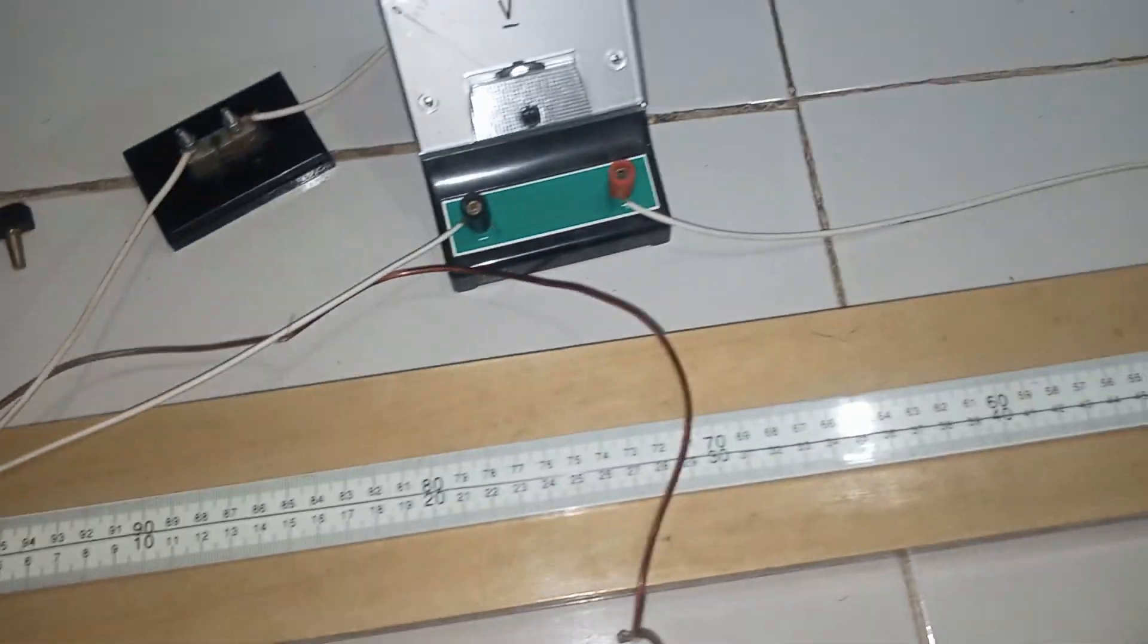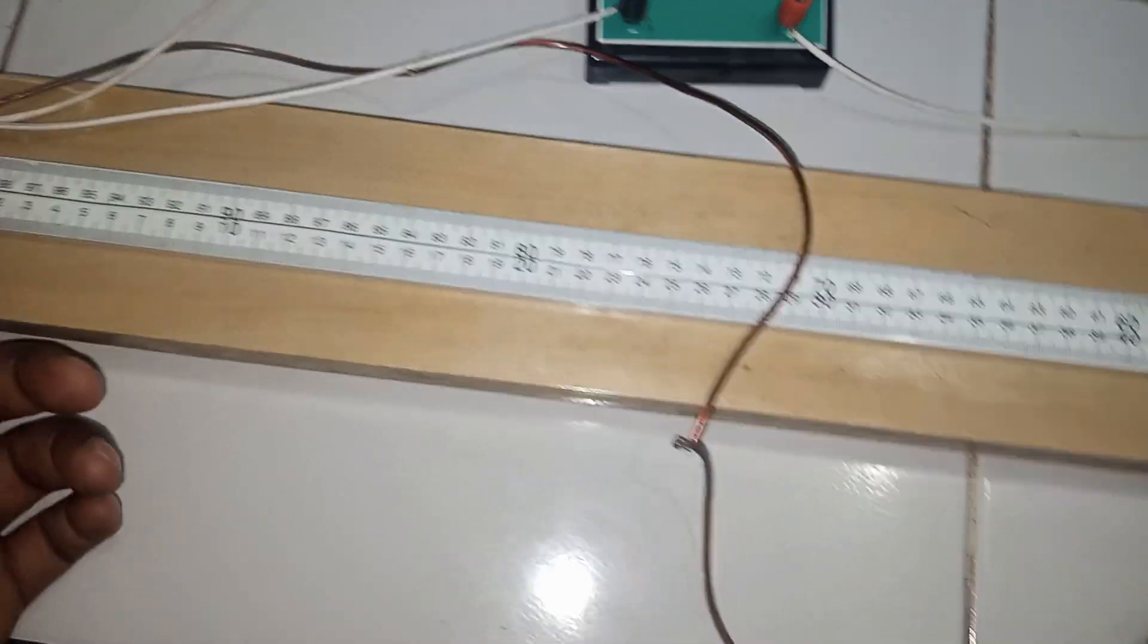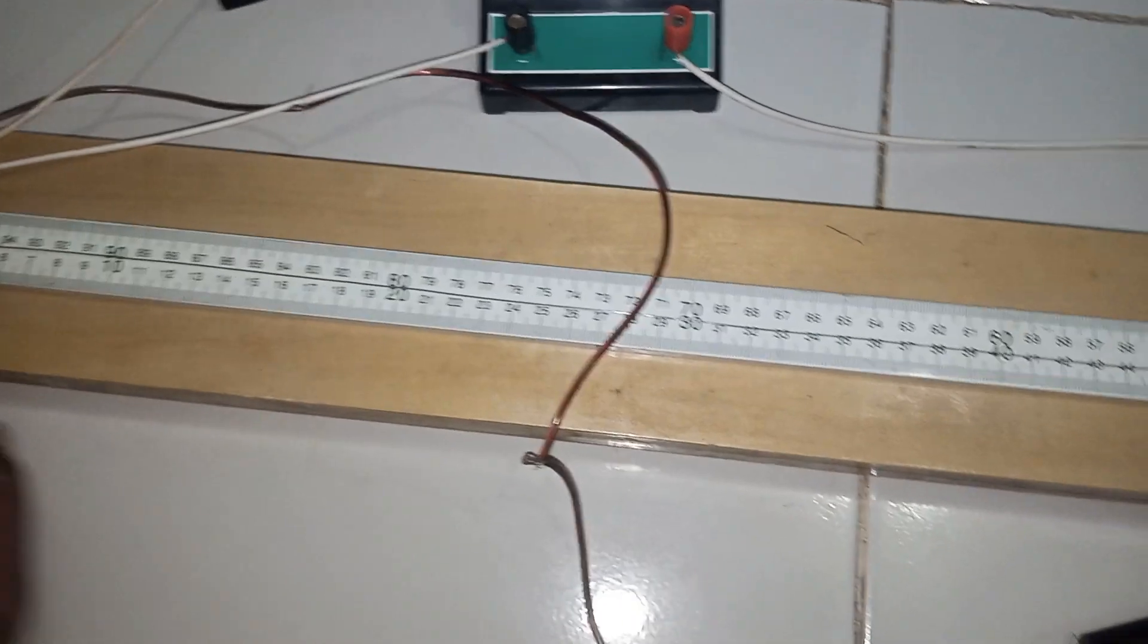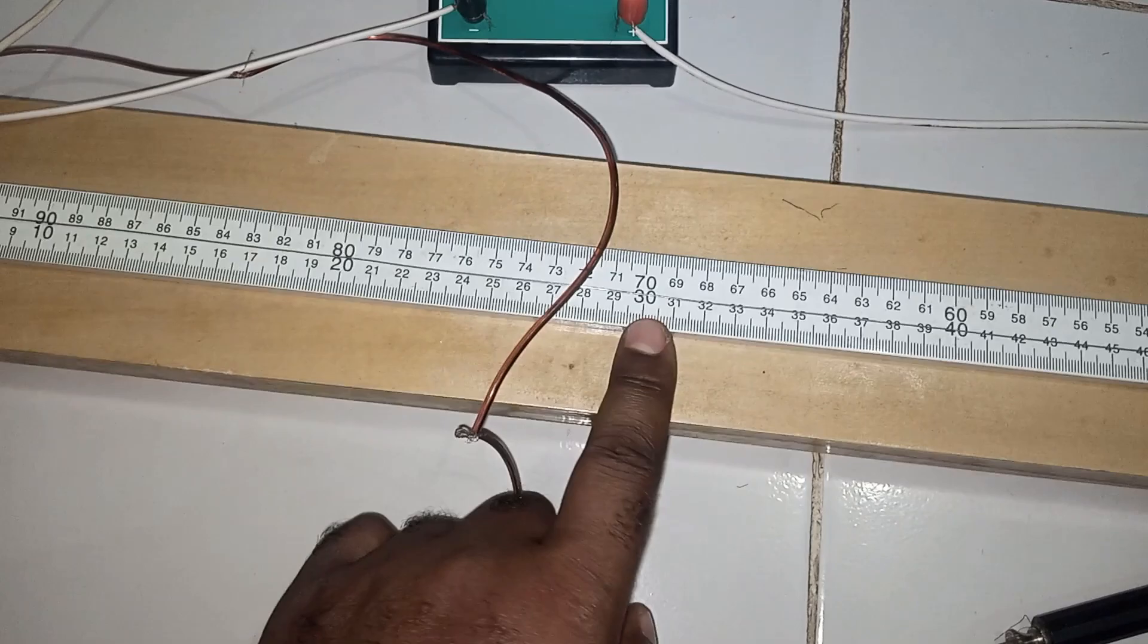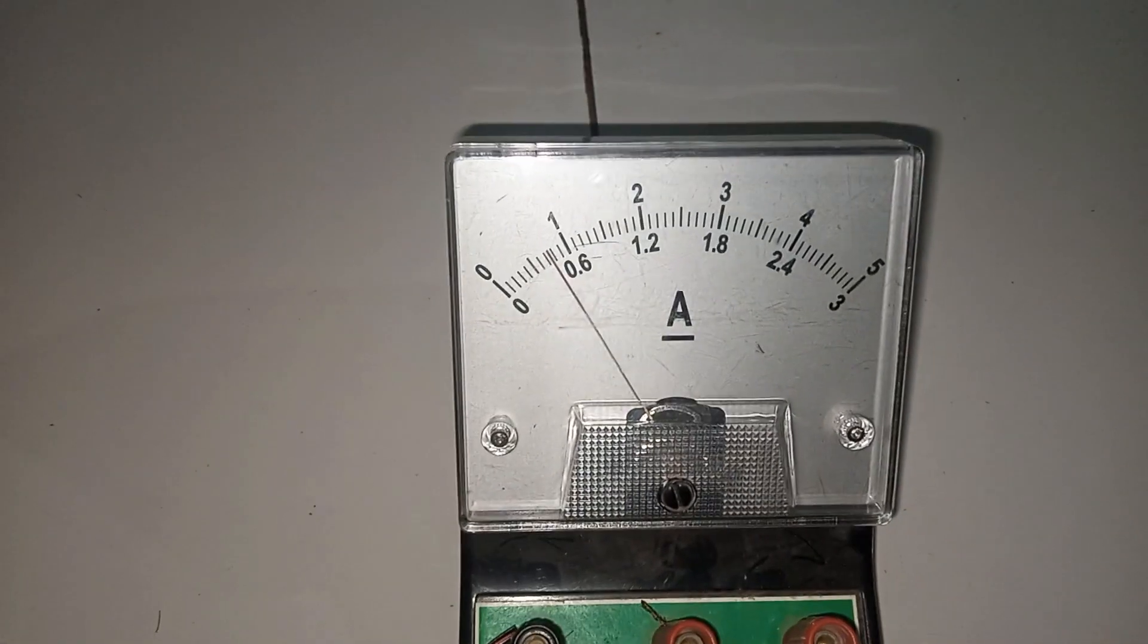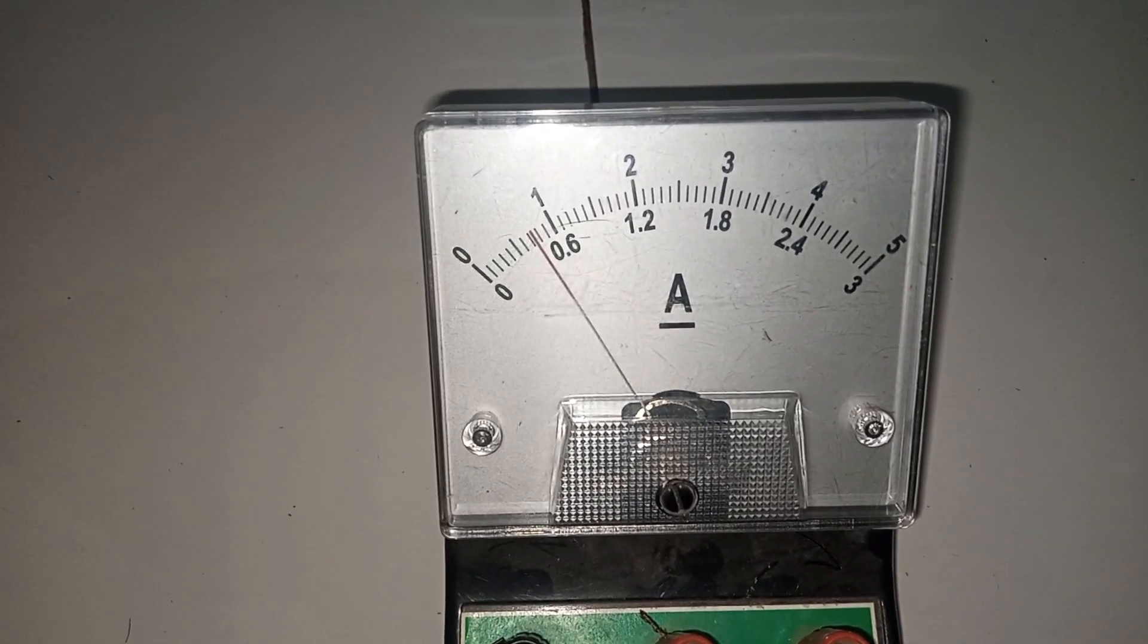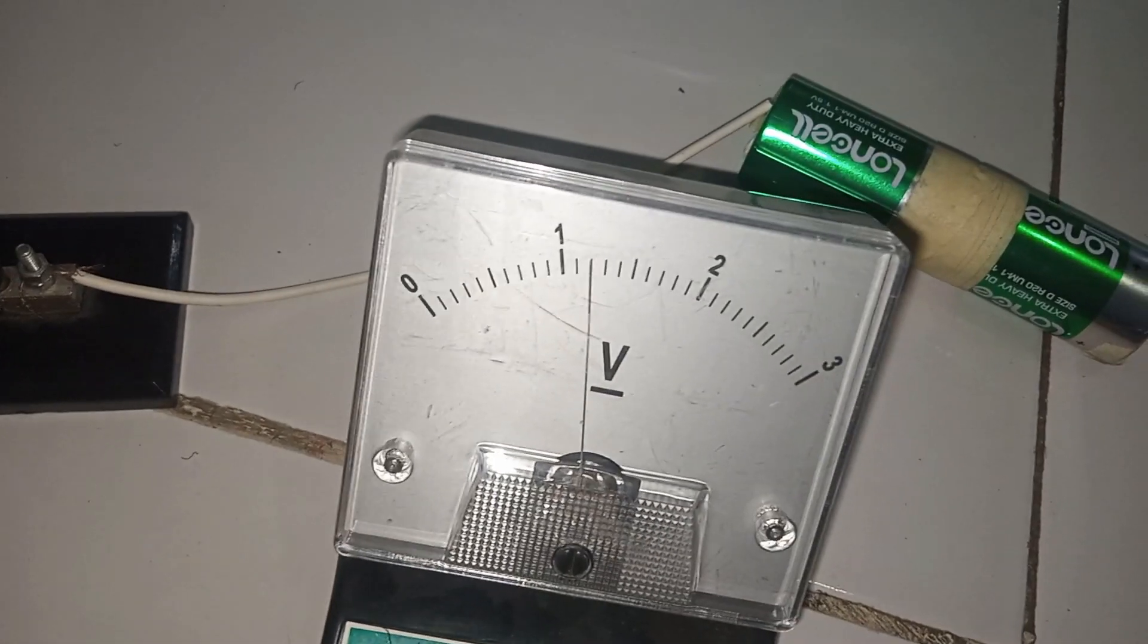So I'm quickly going to take my readings now with the jockey tapped on the potentiometer wire. We are starting with the distance of 0 to 30. According to the diagram, you see at 30, so here is 0 to 30. I'm going to be tapping the jockey at 0.30, and then I will take note of the voltmeter reading and the ammeter reading as well. So let me put in my key. The reading here is 0.45 at the center there, and this is 1.2.